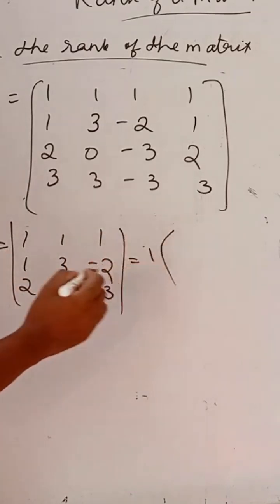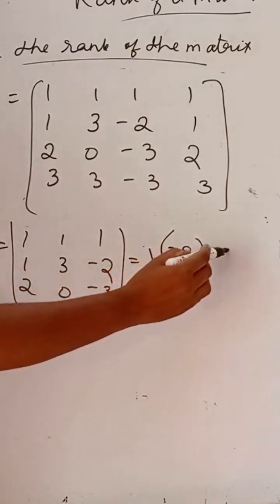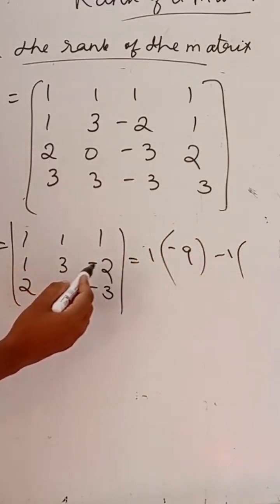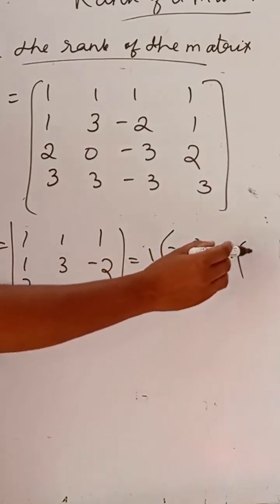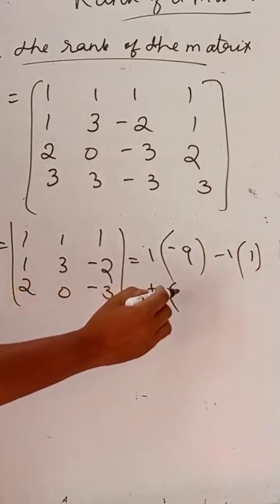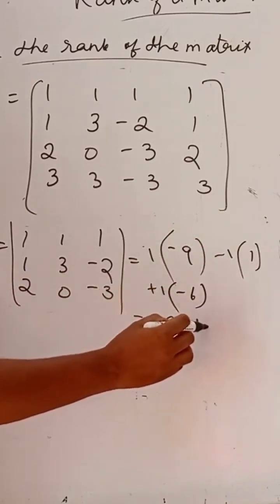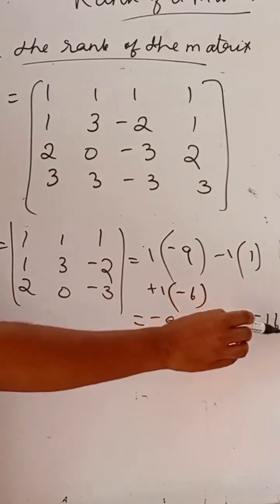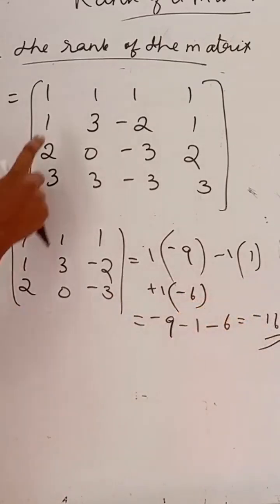So, it is equal to 1 into 3 into minus 3, that is minus 9, then minus 0, then minus 1 into 1 into minus 3 minus 3, then plus 4. Minus 3 plus 4 is 1, then plus 1 into 0 minus 6. That is equal to minus 9 minus 1 minus 6, and that is equal to minus 16. So, the determinant of this 3 by 3 matrix is minus 16.